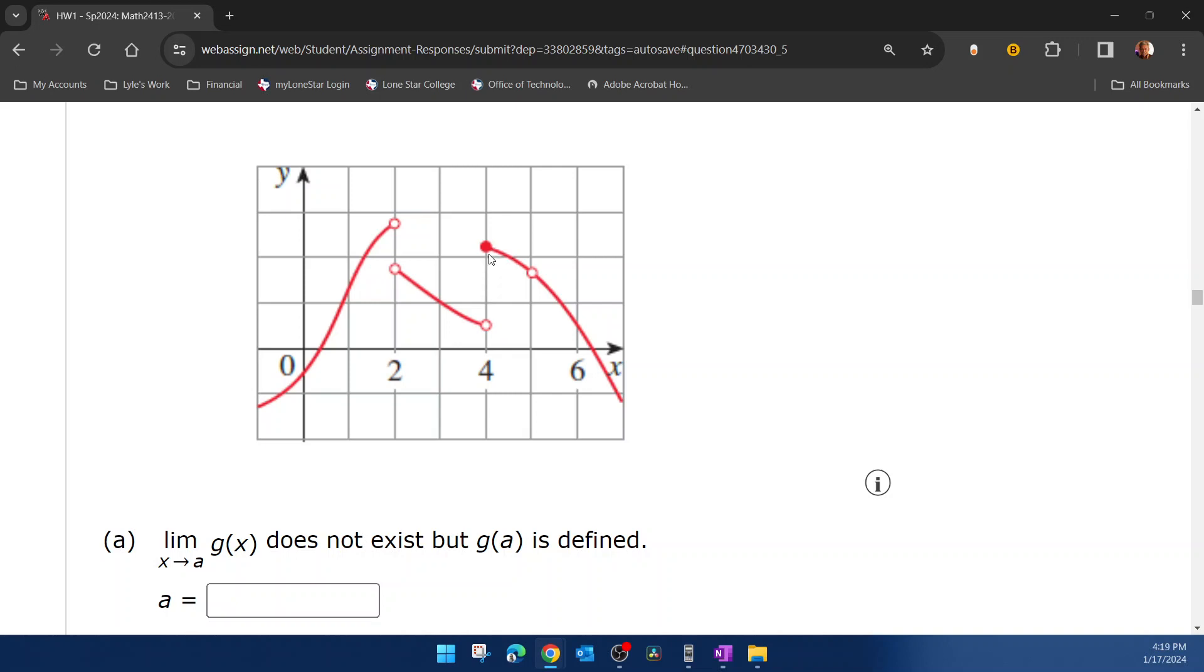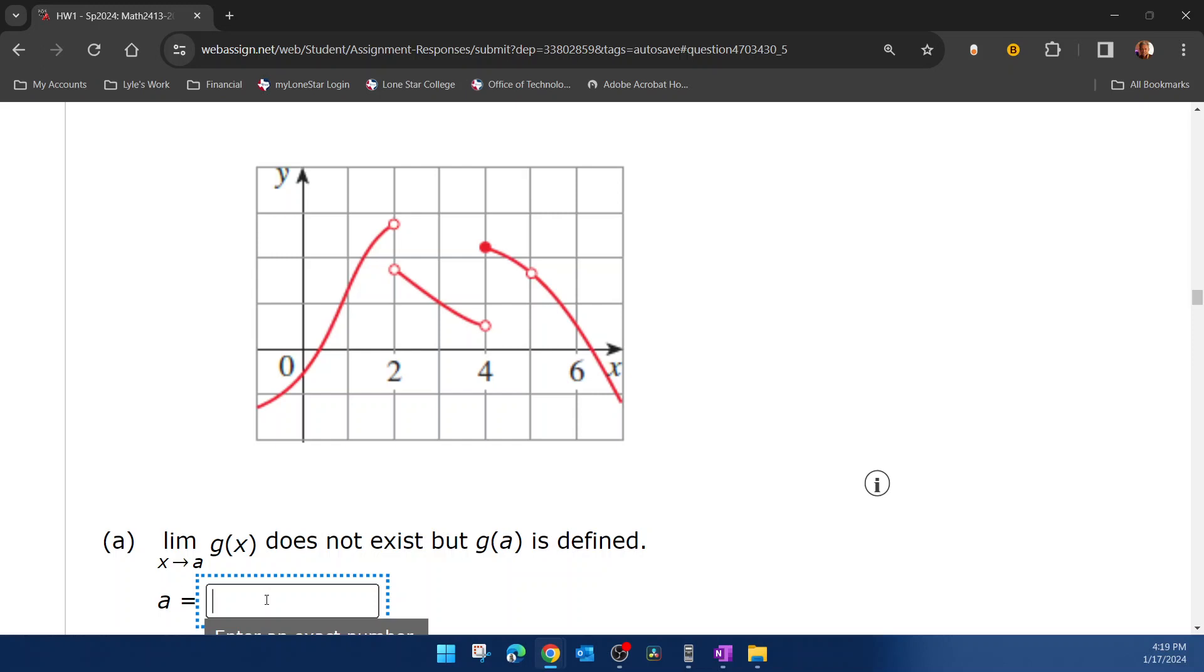And that is the only place that I see a solid dot but where there's what we call a discontinuity, where the graph doesn't connect there. And so I'm going to say that that's probably 4.